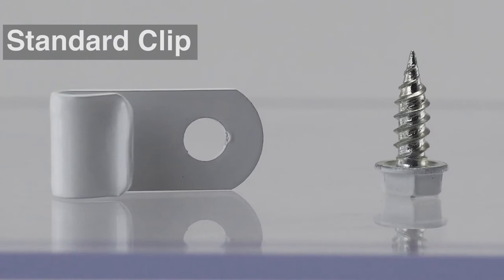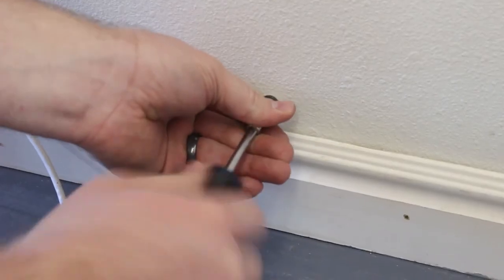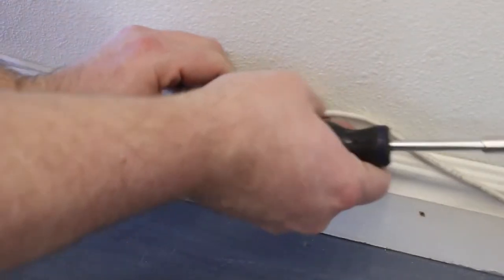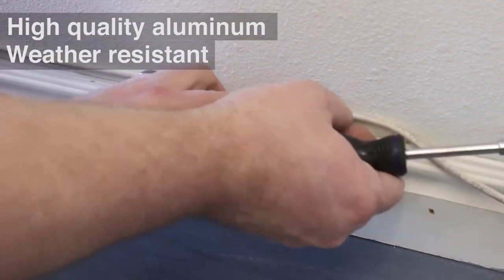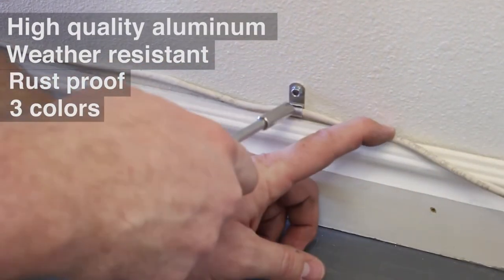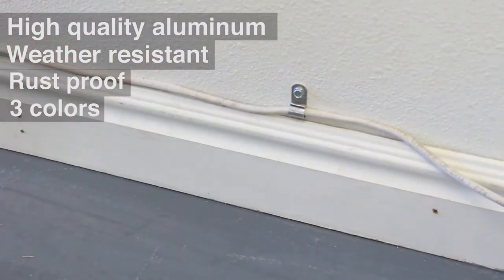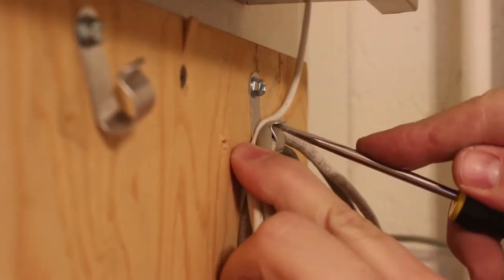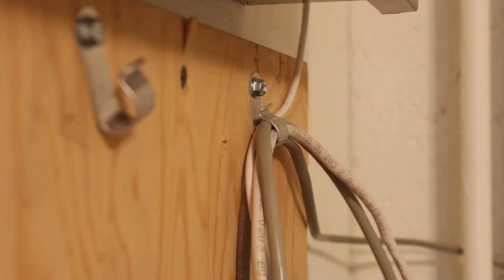The standard clip works great on all those applications we talked about with the shark tooth anchor. It's also great because it's high quality aluminum, it's weather resistant, it doesn't rust, it can be colored to match your gutter, fascia, or stucco, and it is also reusable. This is definitely our most flexible seller.